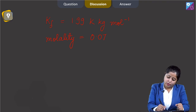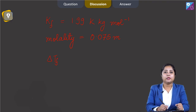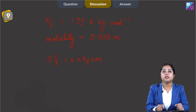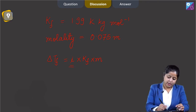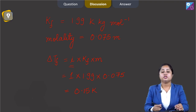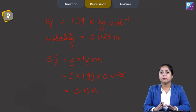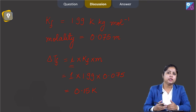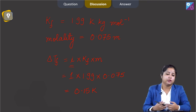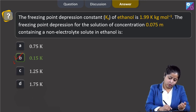We need to calculate ΔTf using the formula: ΔTf = i × Kf × molality. Since the solute is a non-electrolyte, i = 1. So ΔTf = 1 × 1.99 × 0.075 = 0.15 K. Students, try to avoid using a calculator — initially it takes more time, but eventually your speed and accuracy will improve. The correct answer is option B.